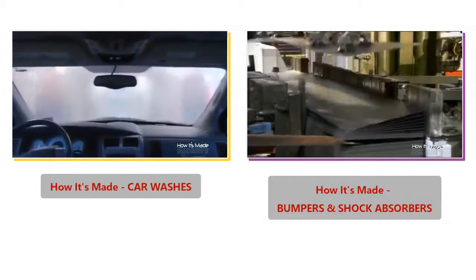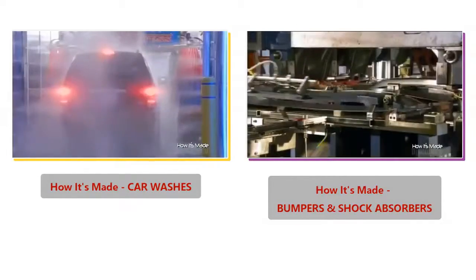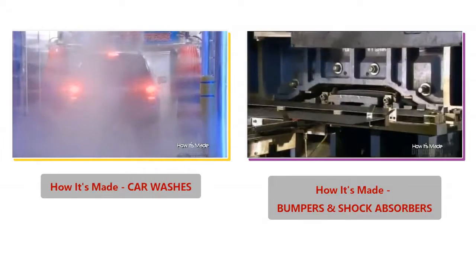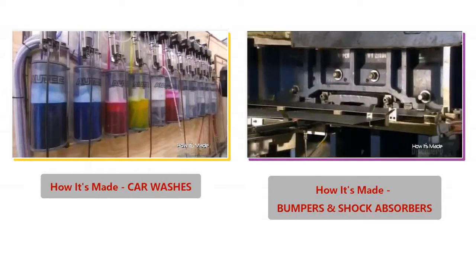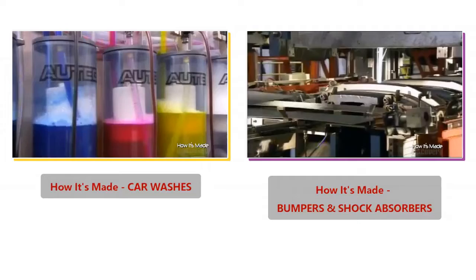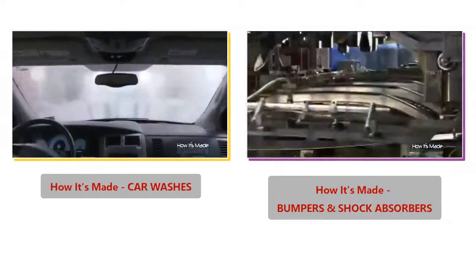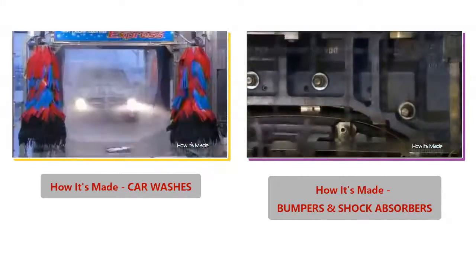They start out as blanks, steel sheets just two millimeters thick. These ones are en route to becoming truck bumpers. A robot feeds each blank through a series of dies, seven to nine of them, depending on the bumper model.